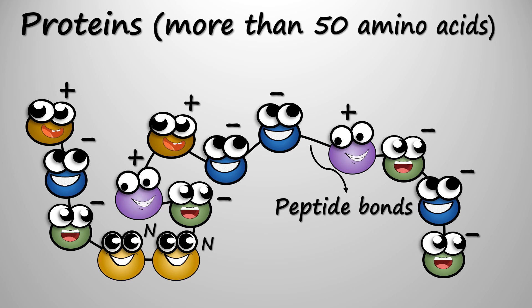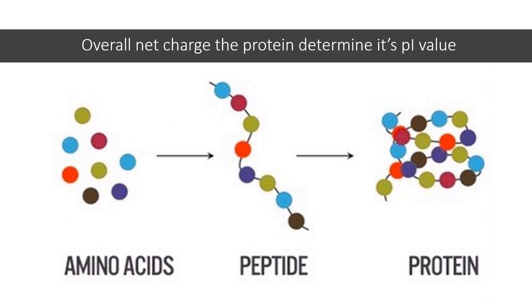Since proteins have different combinations of positive, negative, and neutral charge amino acids, they will have different net charges. This overall net charge determines the PI value of the protein. Thus proteins have different PI values, meaning different proteins will have different pH values at which their net charge will be zero, and this concept is exploited in isoelectric focusing.